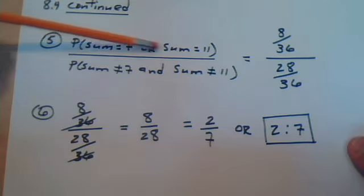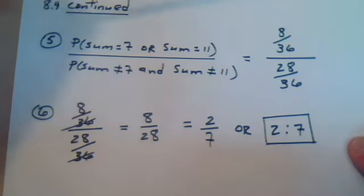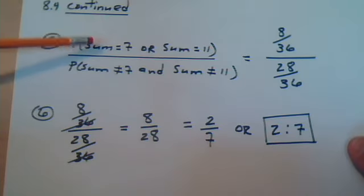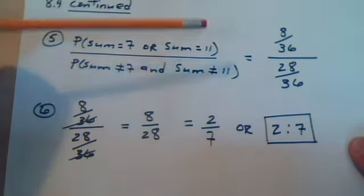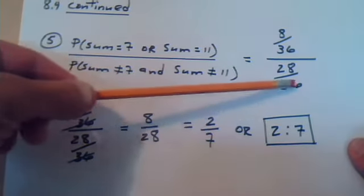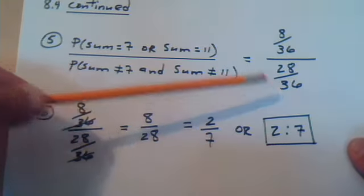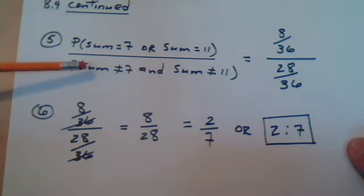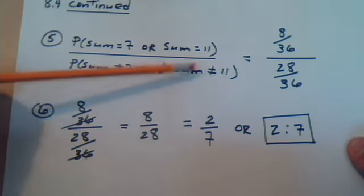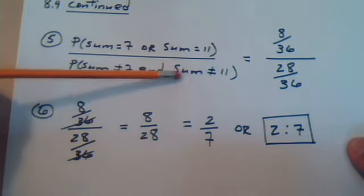So, the top probability is 8 out of the 36 pairs of dice have a sum of 7 or sum of 11. And the denominator is 28 out of the 36 fit the description that they don't add up to 7 and they do not add up to 11.